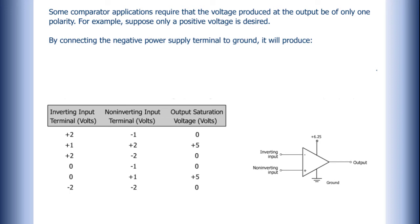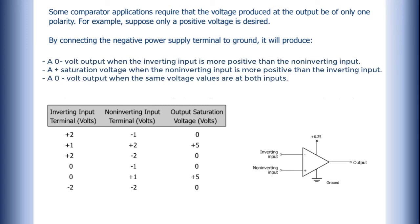By connecting the negative power supply terminal to ground, it will produce a 0V output when the inverting input is more positive than the non-inverting input, a positive saturation voltage when the non-inverting input is more positive than the inverting input, and a 0V output when the same voltage values are at both inputs.